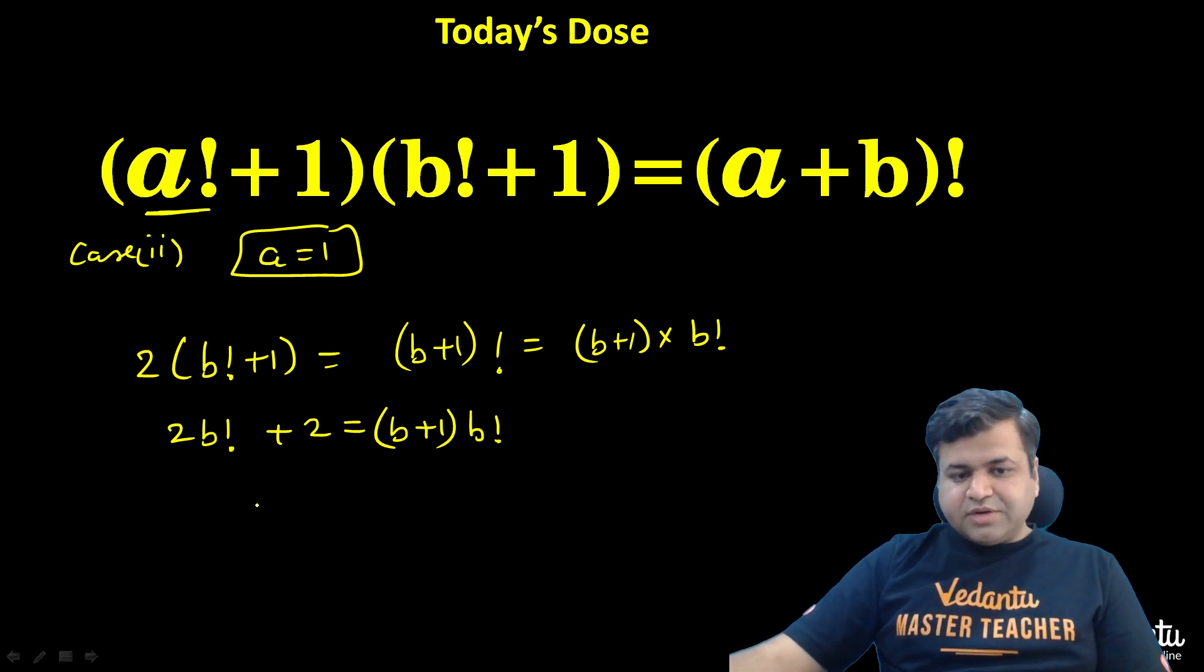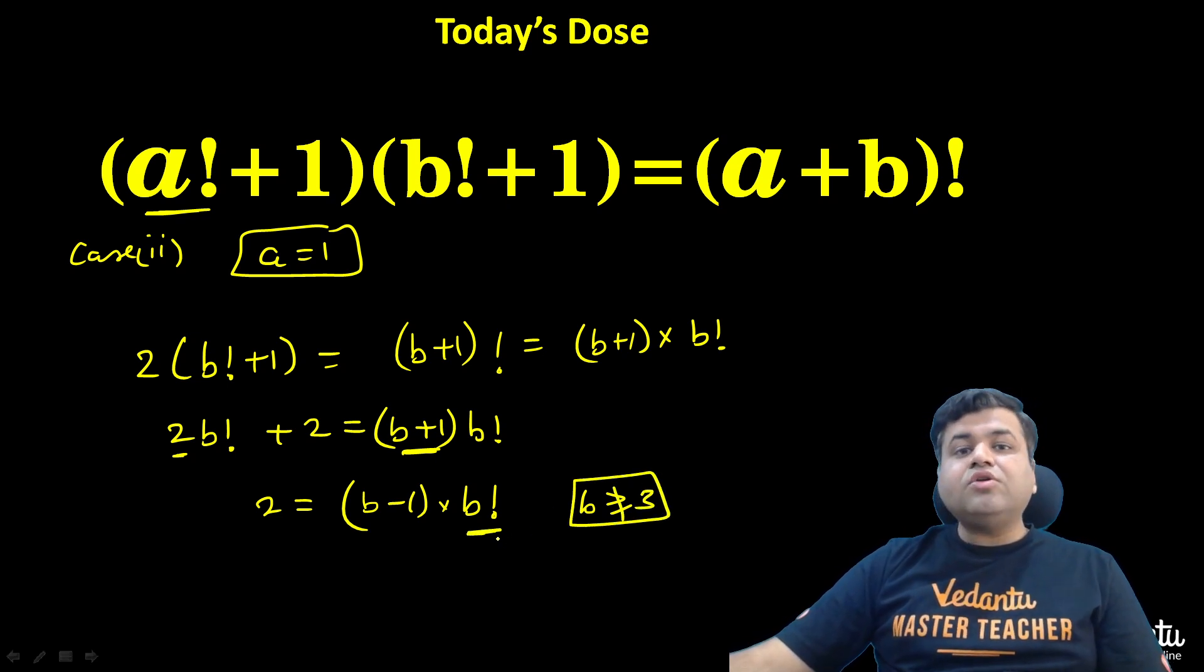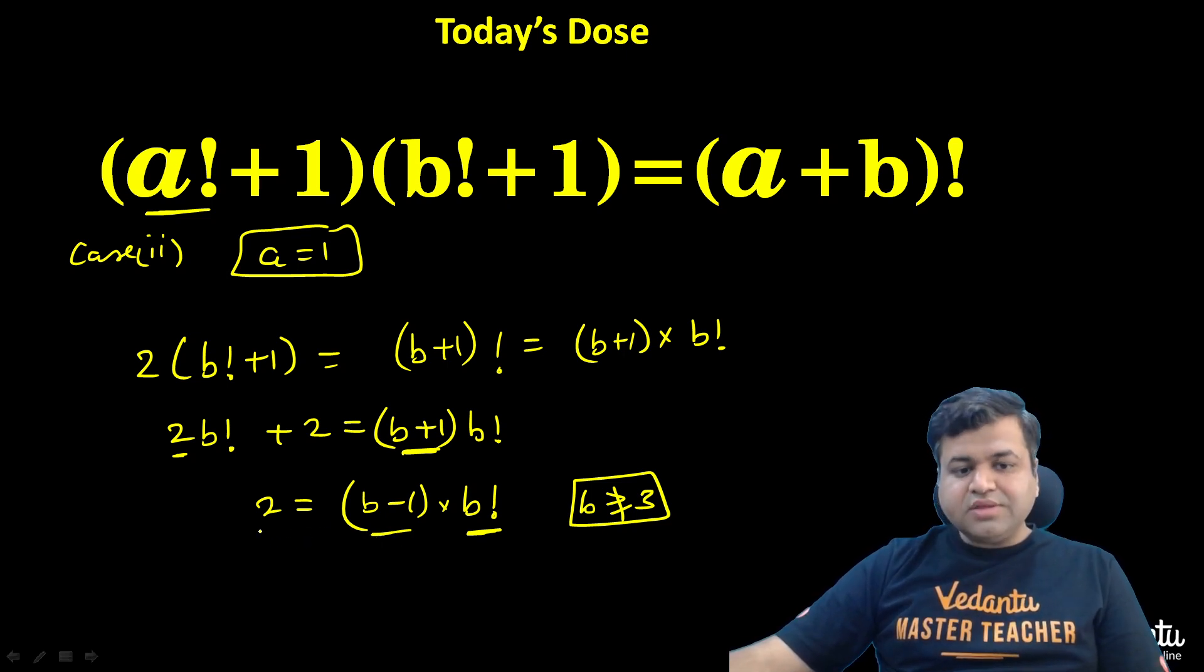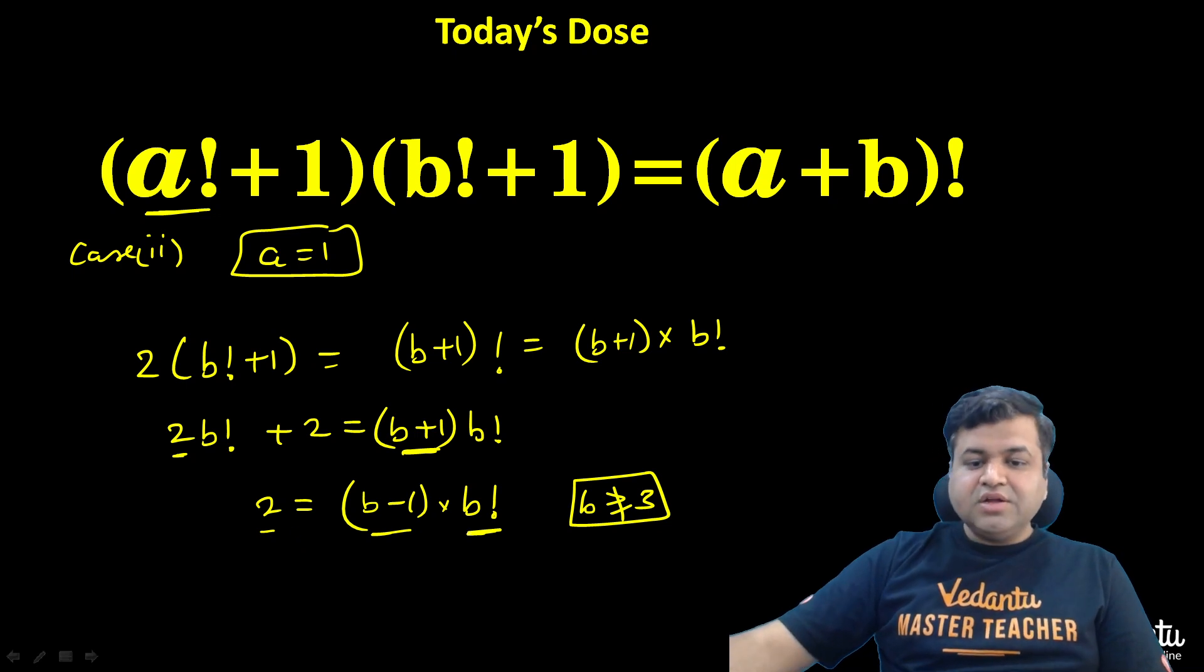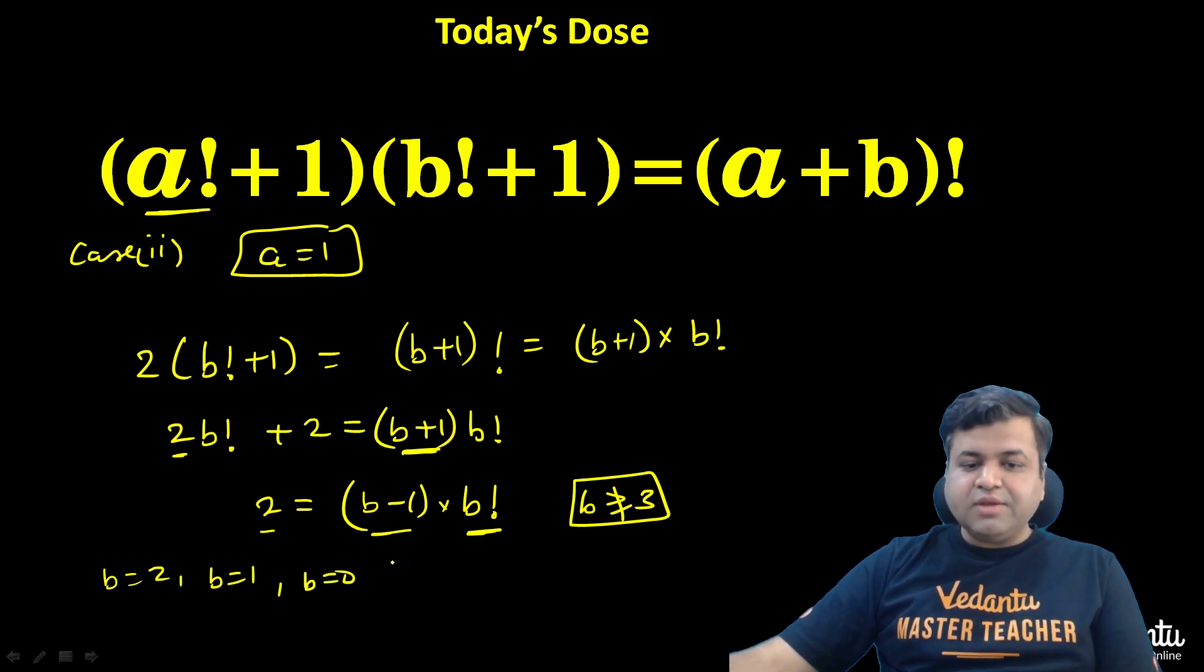Or you can say b factorial on the left hand side, so this becomes 2 equals b plus 1 minus 2, that will become b minus 1 times b factorial. Obviously, now here b cannot be greater than or equal to 3. If b is greater than or equal to 3, then b factorial will be greater than or equal to 6. But 6 times an integral value cannot equal 2. So that means b is either 2 or b is 1 or b is 0. These are the only 3 possibilities.